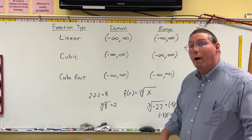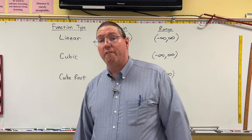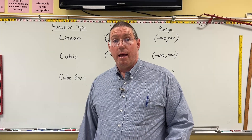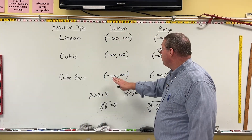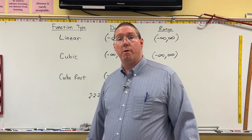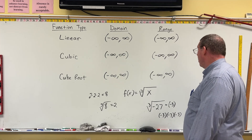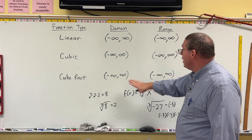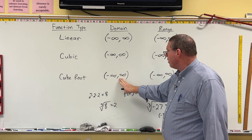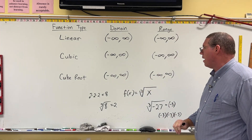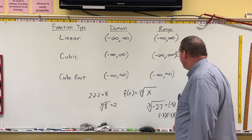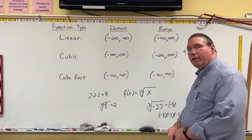Unlike square roots, where you can't take the square root of a negative number, you can take the cube root of a negative number. You can put in negatives, positives, or even 0 — the cube root of 0 is 0. When you input a negative, you get a negative output; when you input a positive, you get a positive output. So cube roots have a domain of negative infinity to positive infinity and a range of negative infinity to positive infinity.